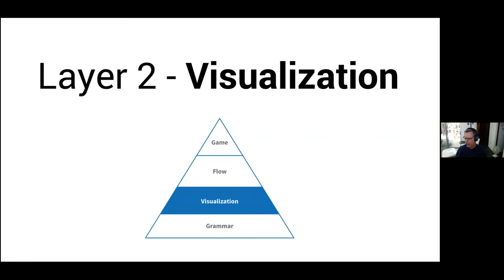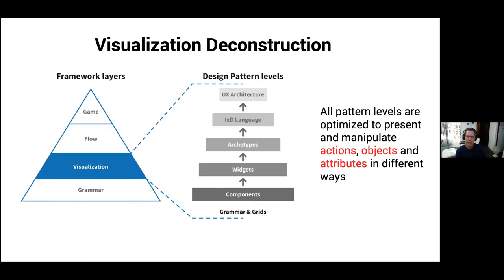Now a pop-up to layer two: visualization. Visualization is actually one of the larger chapters in the book. It explodes into its own hierarchy, ranging from the raw components of a graphical user interface, through the page template archetypes, into what I'll call a design language, and all the way up into the UX architecture world.